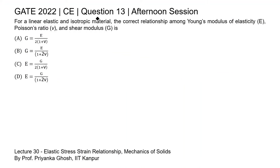This is question 13 of the civil engineering paper of GATE 2022 afternoon session. For a linear elastic and isotropic material, the correct relationship among Young's modulus of elasticity, Poisson's ratio, and shear modulus is...